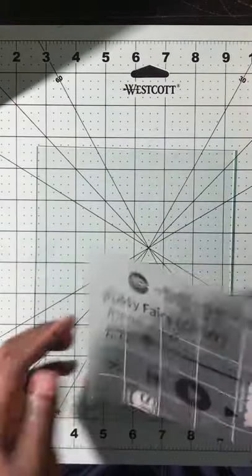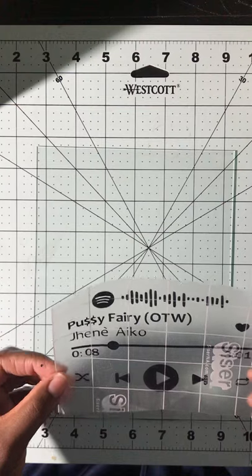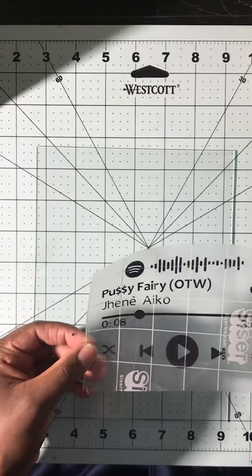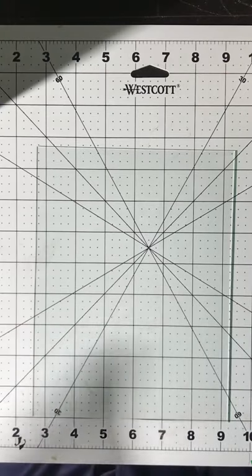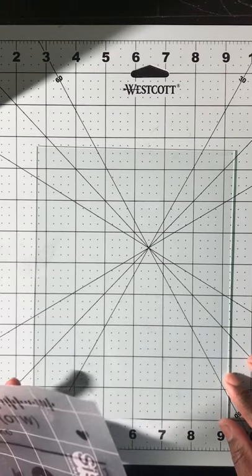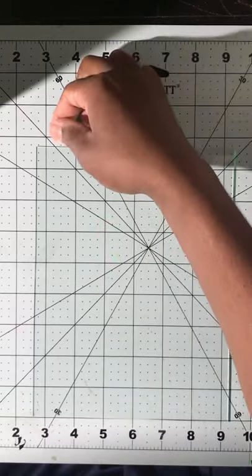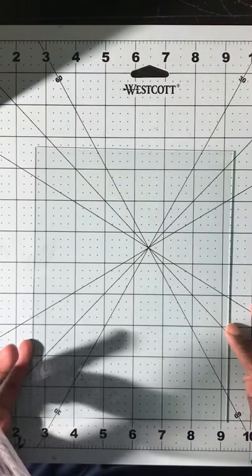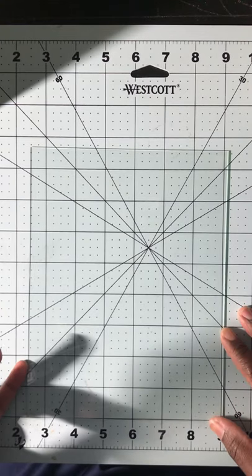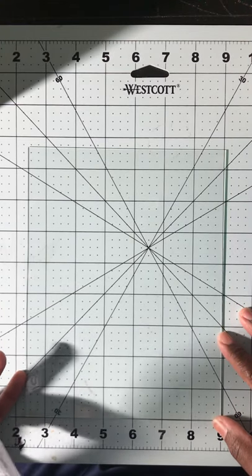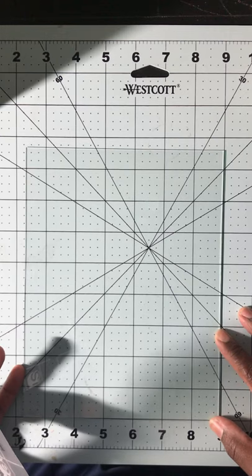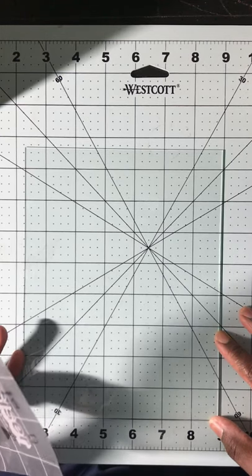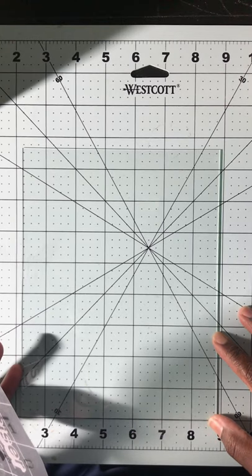Finally, okay, so we got it off. I'm gonna have to fix that zero right there because it moved when I was trying to scrape. Okay, so I have my glass lined up on my mat here. I like the dots on the mat so it helps me align perfectly.